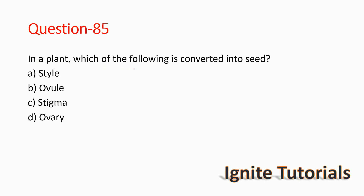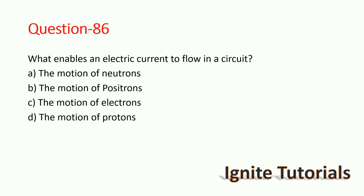Question 84: In a plant, which of the following is converted into seeds? Option B is the correct answer — the ovule is correct. Question 85: What enables electric current to flow in a circuit? The options are motion of neutrons, motion of protons, or motion of electrons.